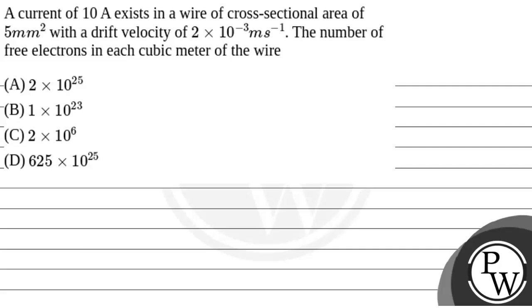Hello Achoo. Let's read the question. The question says that a current of 10 Ampere exists in a wire of cross-sectional area of 5 mm square with a drift velocity of 2 into 10 to the power minus 3 meter per second. The number of free electrons in each cubic meter of the wire is?